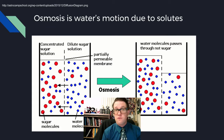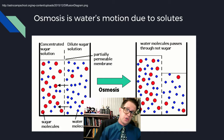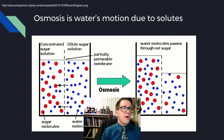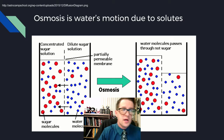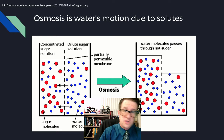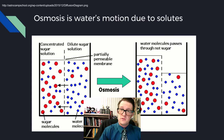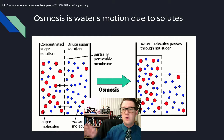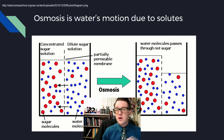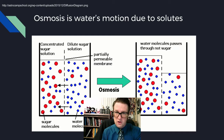Osmosis is the diffusion of water — usually from high water concentration to low water concentration. We identify whether there's high or low water concentration by looking at the things dissolved in the water, which we call solutes. If you have more stuff dissolved, that means there's less water. So water will move from lots of water to not a lot of water, or from not a lot of solutes to a lot of solutes.